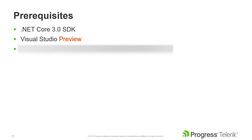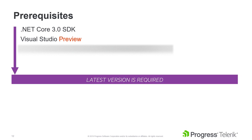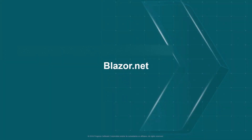Let's discuss what's required for creating a Blazor application. First, you'll need the latest version of the ASP.NET Core 3.0 SDK. Visual Studio Preview Edition is required, and you'll also need the Blazor extension from the Visual Studio Marketplace. The latest version of all of these is required. For more information about prerequisites and where to download the necessary installers, visit Blazor.net and click Get Started.